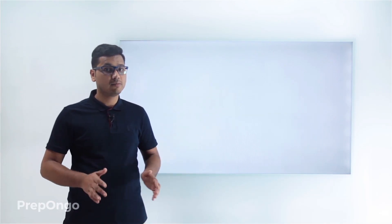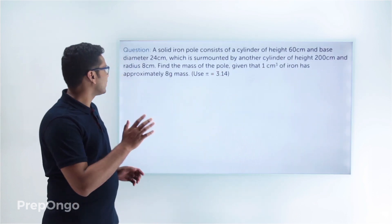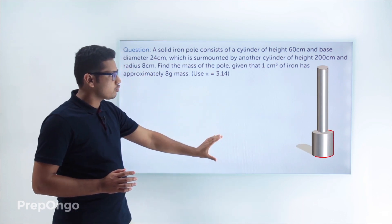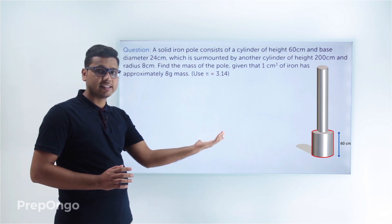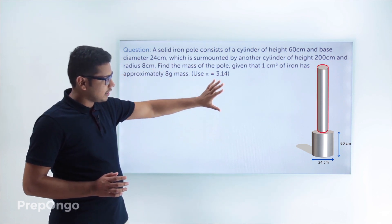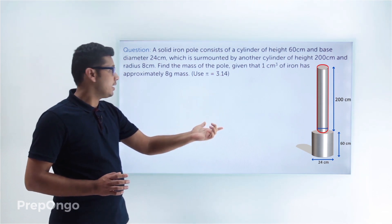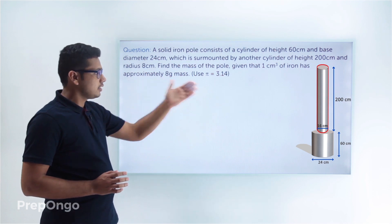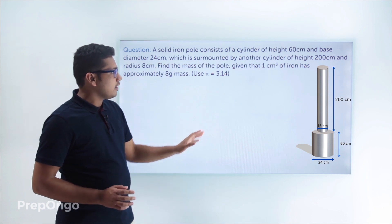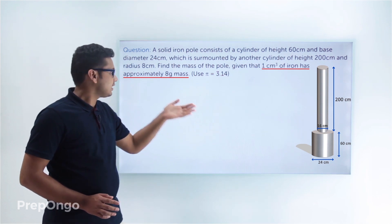Let's learn how to calculate the mass of a given solid object. This question describes a solid iron pole consisting of a cylinder whose height is 60 centimeters and diameter is 24 centimeters, surmounted by another cylinder whose height is 200 centimeters and diameter is 16 centimeters (radius 8 centimeters). We have to find the mass of this pole given that 1 cubic centimeter of iron has a mass of 8 grams.